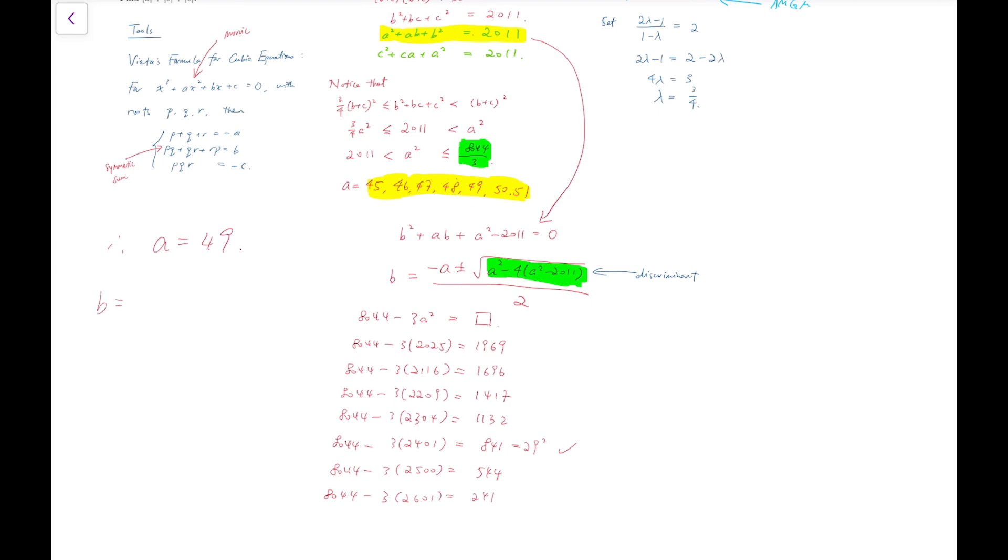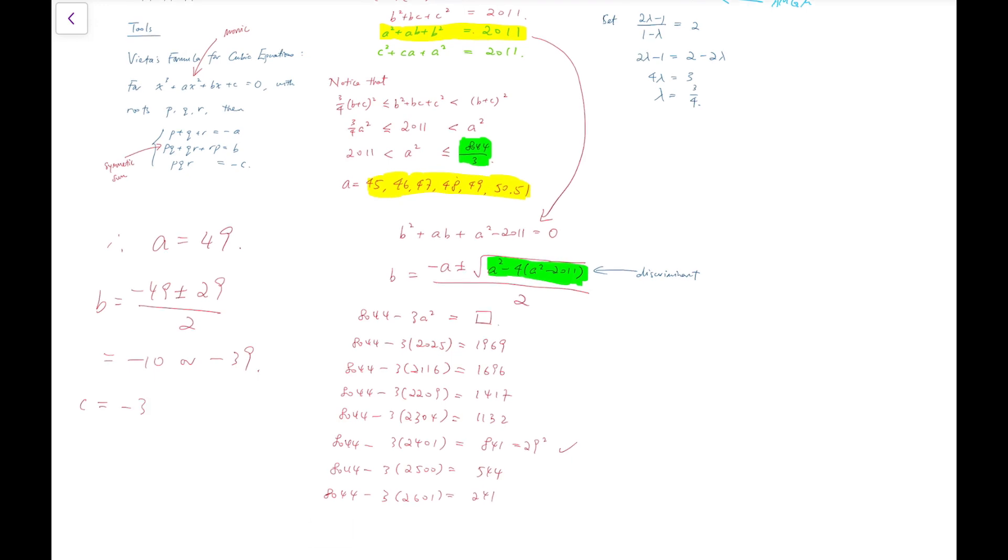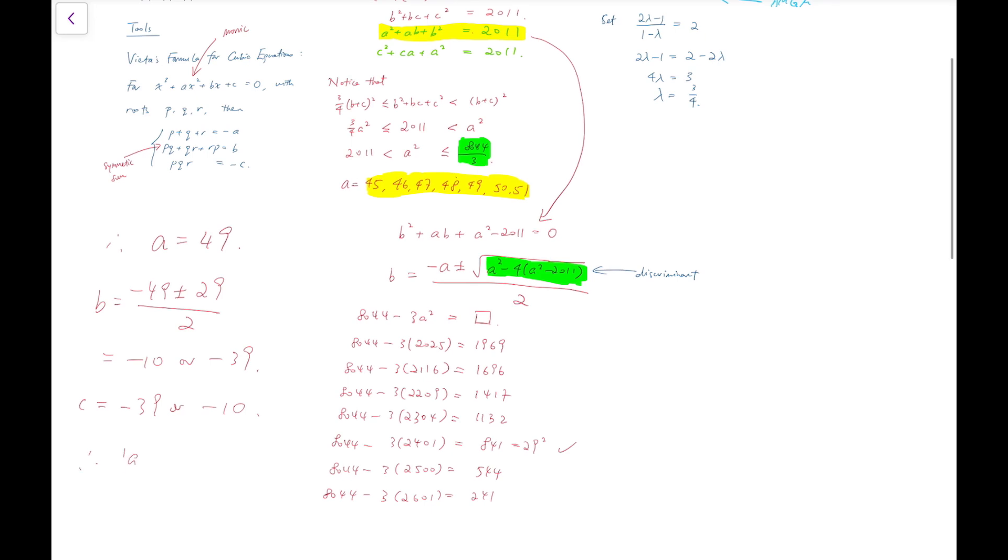And in this case, b is equal to minus 49 plus or minus 29 over 2, which gives minus 10 or minus 39. And from the fact that the sum of a, b and c are 0, we know that c has to be minus 39 or minus 10. So therefore, our required answer is then 49 plus 39 plus 10, and that's 98. So that's our final answer.